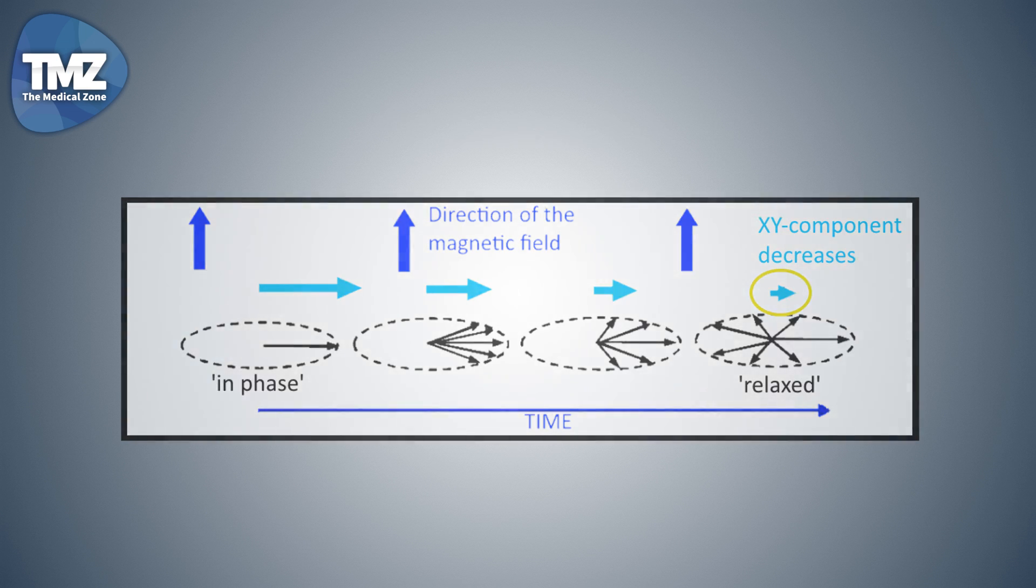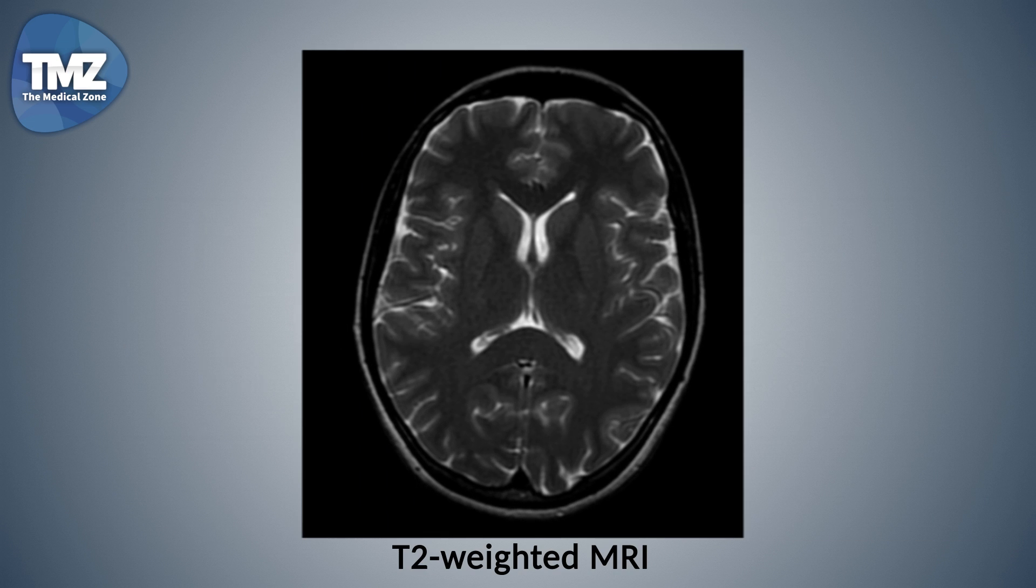And XY is the perpendicular plane. The clinical use of this, on a T2 weighted MRI, fat is intermediate bright and fluid and CSF is bright.